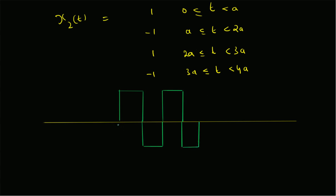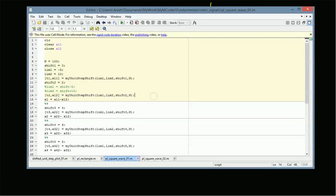So the time axis shows values at 0, a, 2a, 3a, and 4a, with the signal alternating between values of 1 and minus 1. The goal is to plot this square wave using MATLAB.